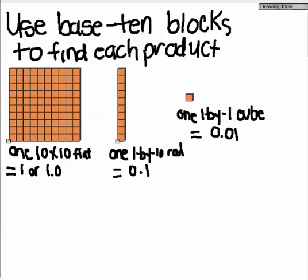You can see here, this block represents a 10 by 10 flat, which will equal 1. And this rod is a 1 by 10 rod, which represents 0.1. And here is a cube, which represents 0.01.